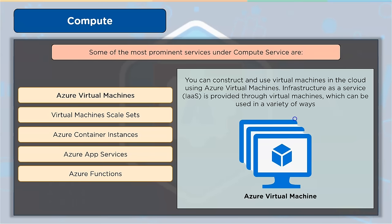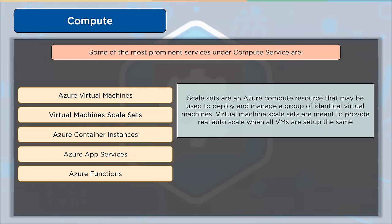Virtual Machine Scale Sets are an Azure compute resource used to deploy and manage a group of identical virtual machines. They provide real auto-scale when all VMs are configured the same, so virtual machines do not need to be pre-provisioned. Scale Sets make it easy to develop large-scale services for big computing, big data, and containerized workloads — more VM instances can be added as demand grows and withdrawn when demand decreases, either manually, automatically, or as a hybrid of both.